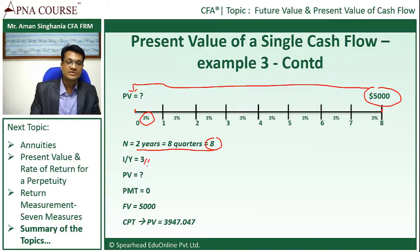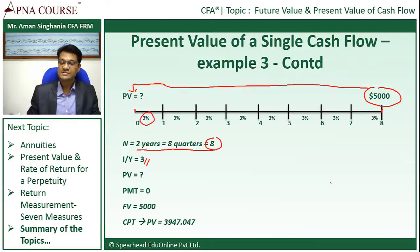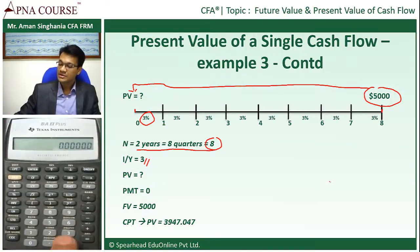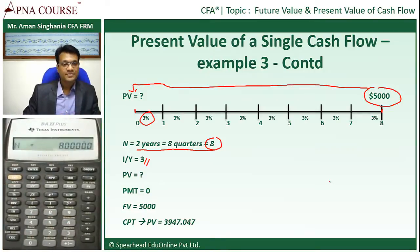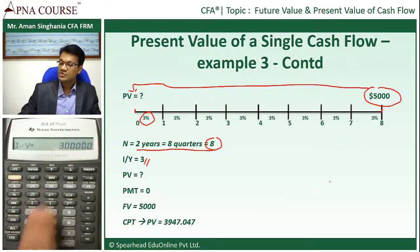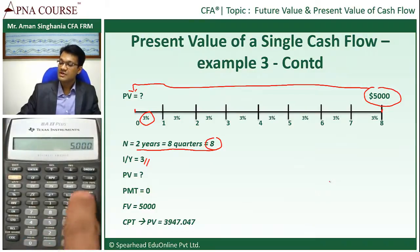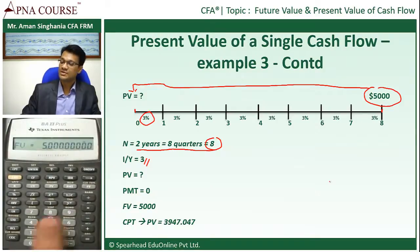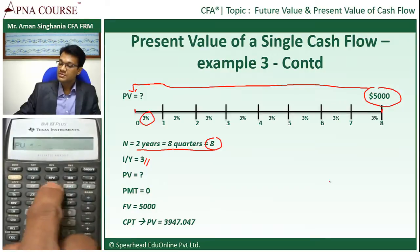For each period, the rate of discounting is 3% per quarter, per period. I save these numbers into the calculator. I press CE, then I press 8 and save that as N. I press 3 and save that as I/Y because it's 3% per period. PV is what I need to calculate, so I'll skip that for now. I'll save PMT as 0. Then I'll save $5,000 positive as FV because that's the amount I'm expecting to receive after 8 quarters. Then I'll quickly calculate the present value.